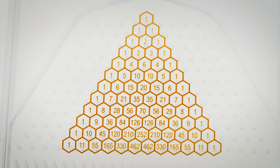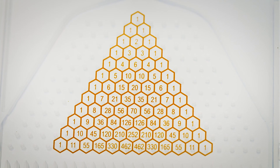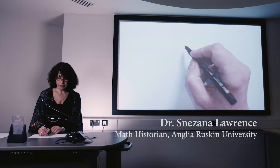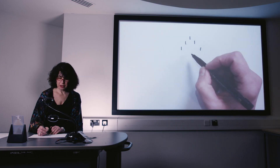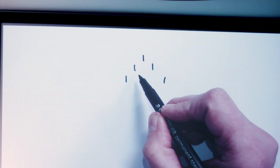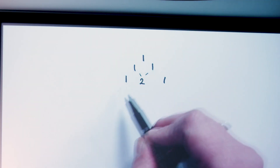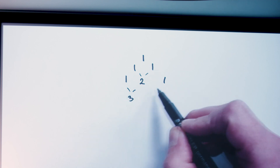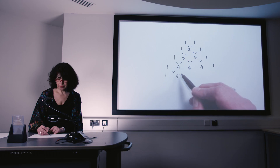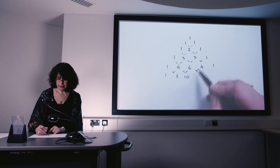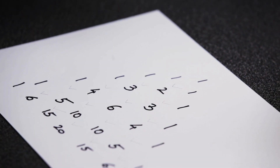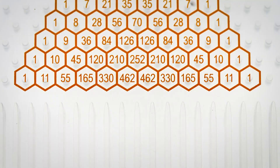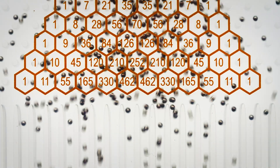A number pattern steeped in history, the triangle has been studied for millennia. We start from one, and on both sides of the triangle there is a succession of ones. In the middle, each value is the sum of the two values above it, and so on. You can quickly see how the pattern develops — and it's the exact same pattern of numbers we get when counting the pathways a bead can take as it descends the Galton Board.